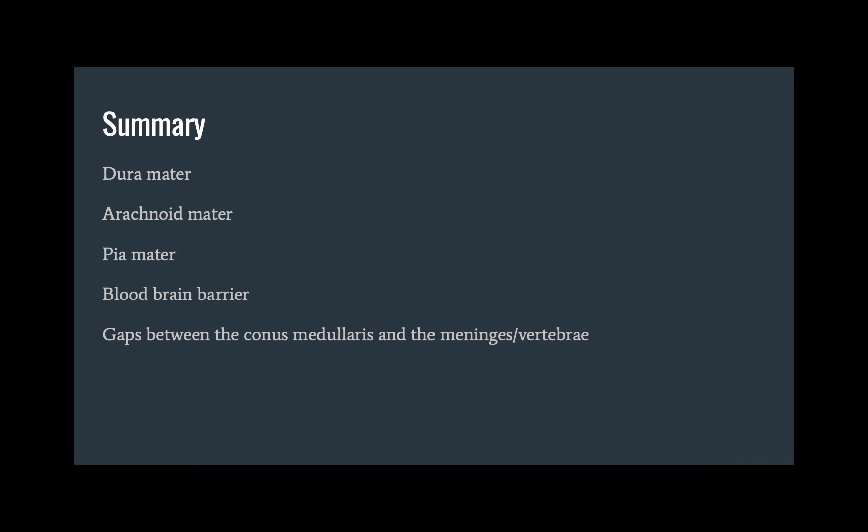Interior to that is the pia mater, comprised of dense irregular to loose connective tissue derived from neural crest cells, closely adhered to the neural structures and blood vessels that go into the brain. It does not actually touch any neural structures due to astrocyte foot processes helping to form the blood-brain barrier. Collectively, the arachnoid and pia mater are known as the leptomeninges due to being thin tissue, both derived from neural crest cells. Finally, there is a gap between the conus medullaris and the end of the meninges or vertebrae, due to a growth disparity during development, which is clinically significant for lumbar punctures and CSF sampling.